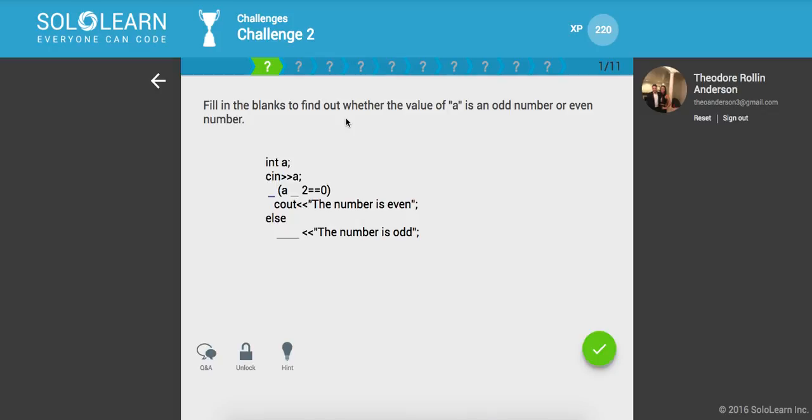Okay, so we're going to do if A divisible, the modulus. If this doesn't give us a remainder, we know it's even. Otherwise, let's print to the console output stream. The number is odd.